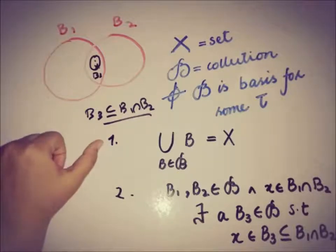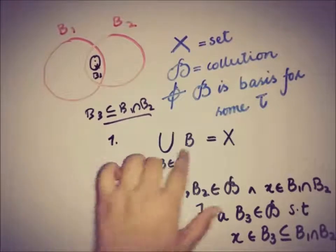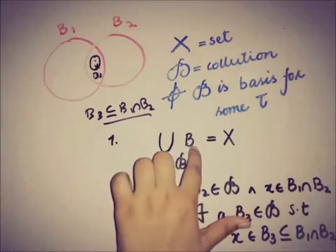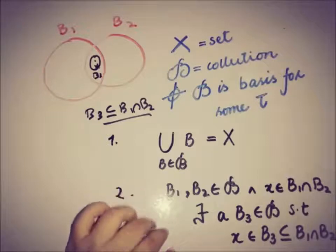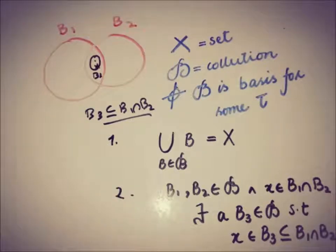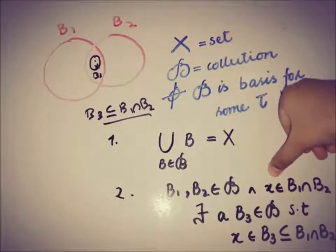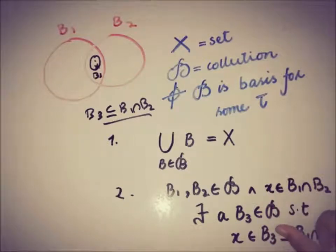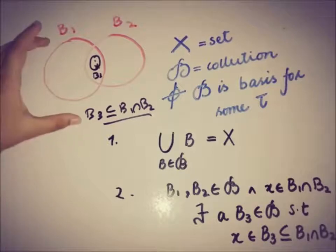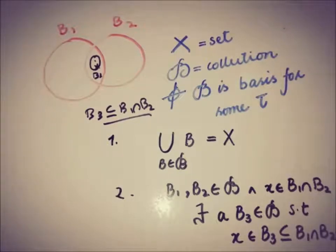The first condition was that the union of the elements of the collection is equal to X. The second condition was that if we pick a pair from that collection and we pick an element from their intersection, then there must be an element from the collection, b3, such that it is a subset of the intersection. This was the graphical representation of the second condition.